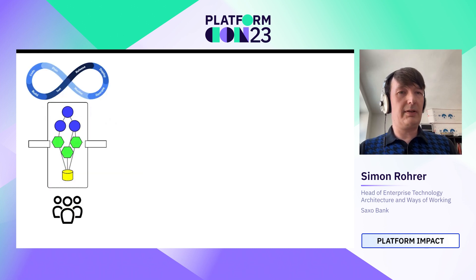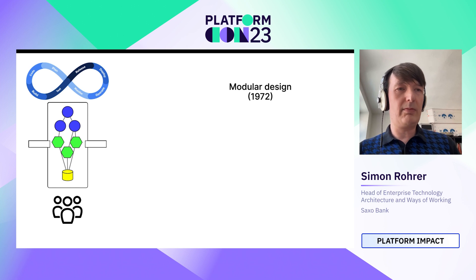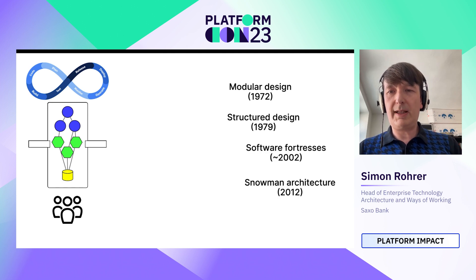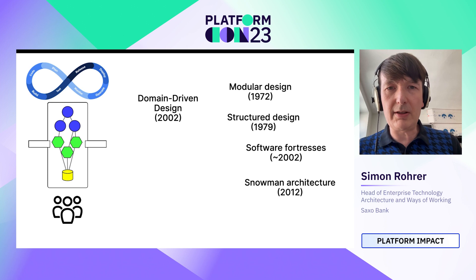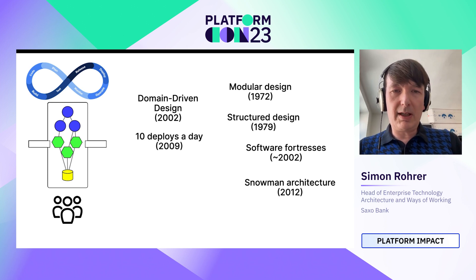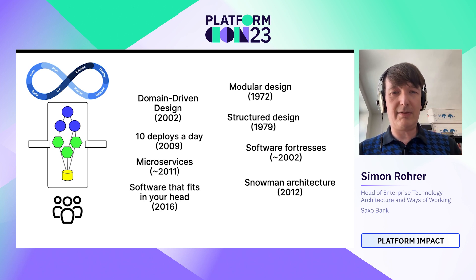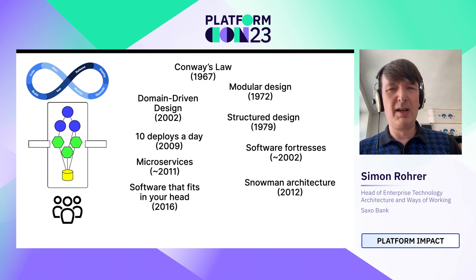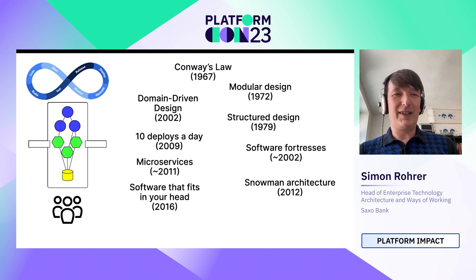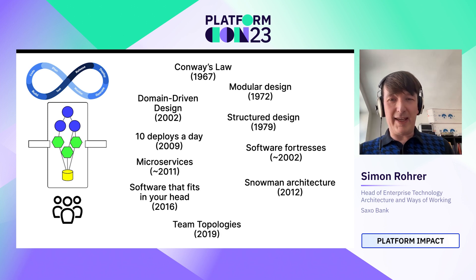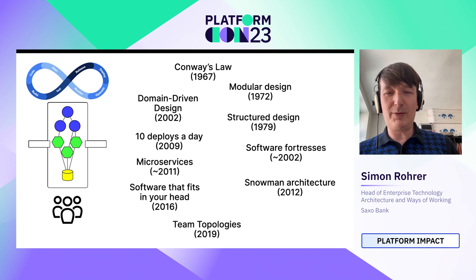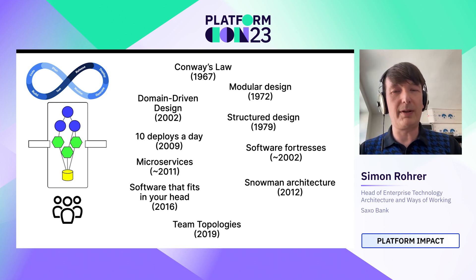The modern way of looking at this is that it's a loop — the team can release independently, develop independently, and they've got an independent piece of value. These ideas aren't that new: modular design from the early 70s, structured design from the late 70s, software fortresses which evolved into the snowman architecture, Eric Evans on domain-driven design, the 10 deploys a day movement at Flickr that became DevOps, microservices, Dan North's concept of software that fits in your head, all preceded by Conway's Law — Conway's observation that organization drives architecture. And probably most recently, the book on Team Topologies, which is as much about architecture as it is about organizations.